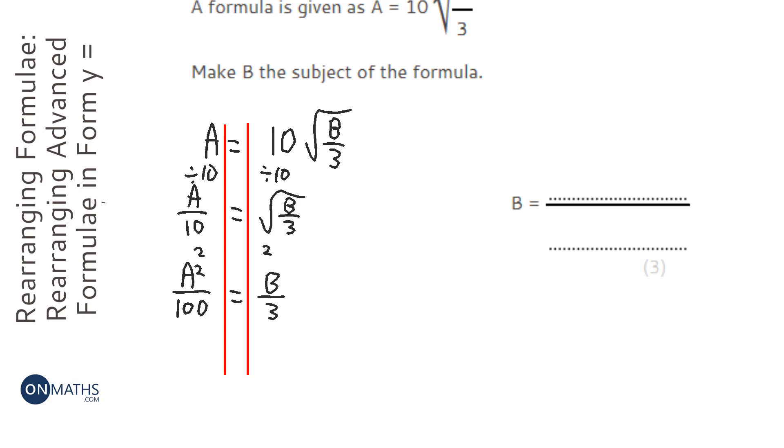And then we've got to get rid of that over 3 by timesing both sides by 3. So we end up with 3A squared over 100 equals B, or B equals 3A squared over 100.